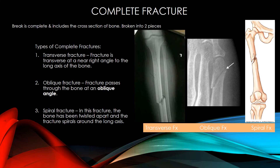A complete fracture means the break is complete, with the cross section of bone broken into two pieces. Types of complete fractures include: 1. Transverse fracture — the fracture is at near right angles to the long axis of the bone. 2. Oblique fracture — the fracture passes through the bone at an oblique angle. 3. Spiral fracture — the bone has been twisted apart and the fracture spirals around the long axis.